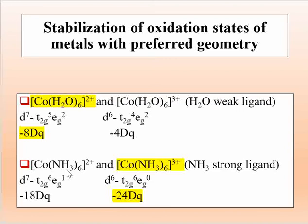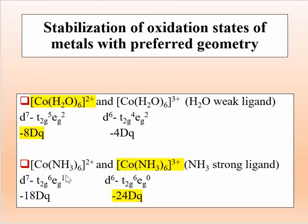The second example is the cobalt complex with NH₃ ligand. Here cobalt forms a complex with ammonia, which is a strong ligand compared to H₂O. Cobalt has two oxidation states: plus 2 and plus 3. We will now see in which oxidation state the cobalt complex is stabilized — different oxidation states stabilize the aqua or amino complex based on crystal field stabilization energy.